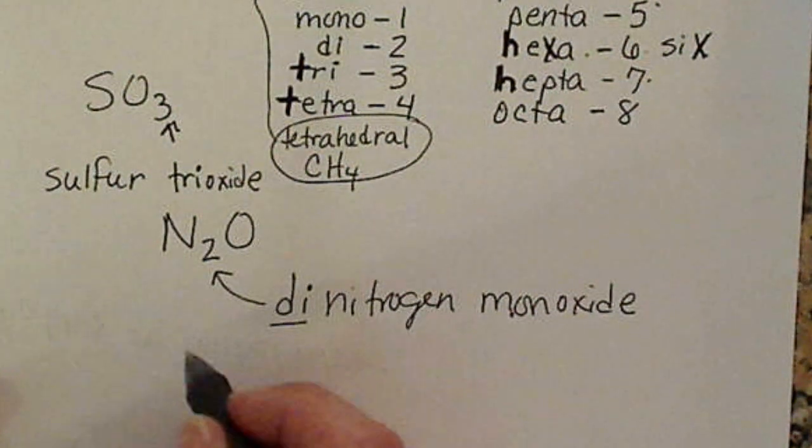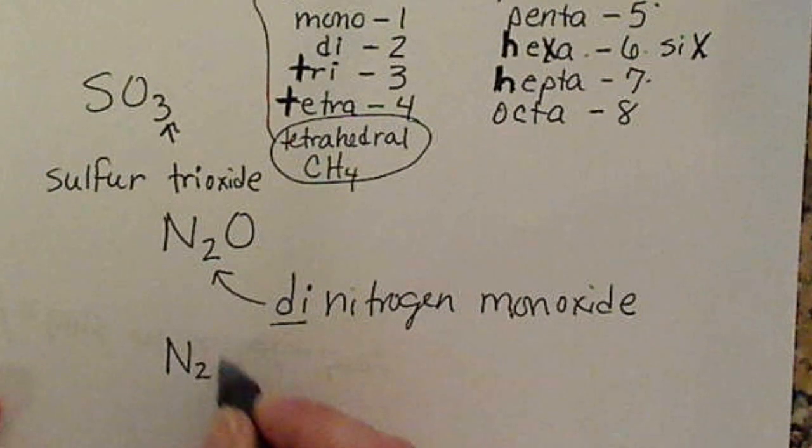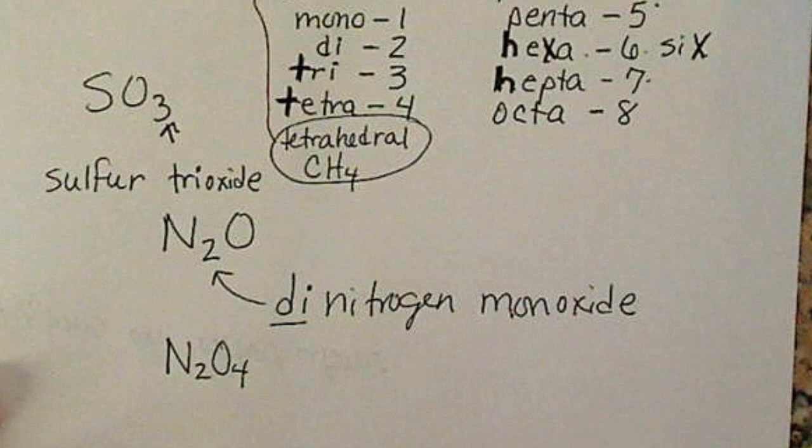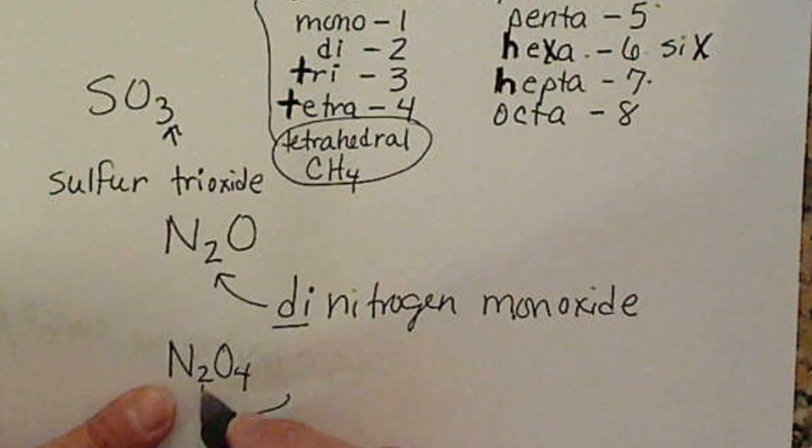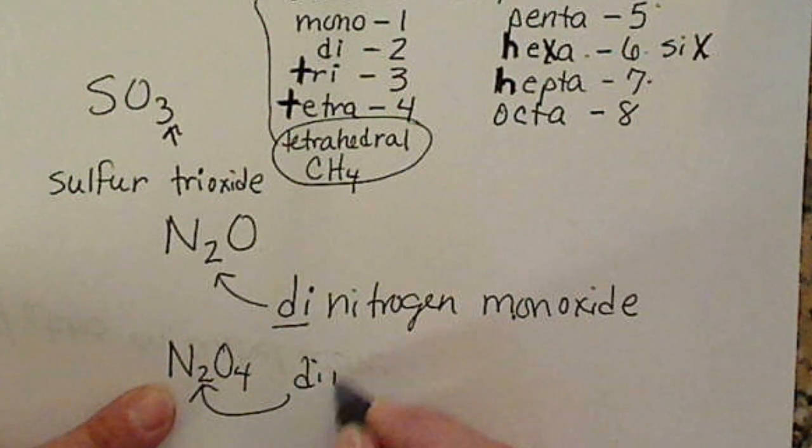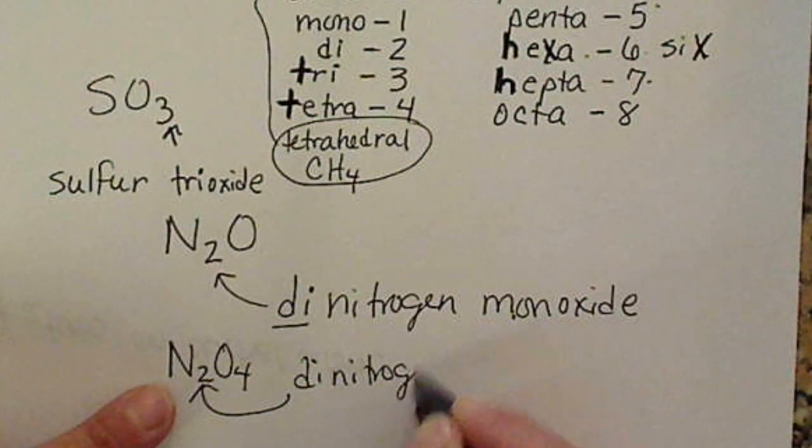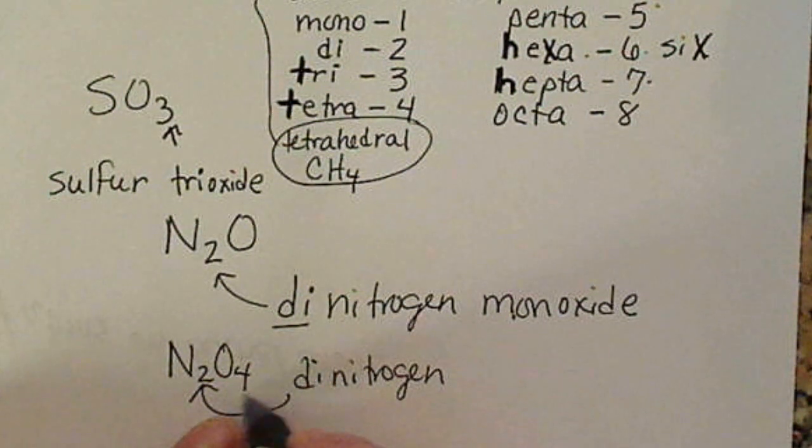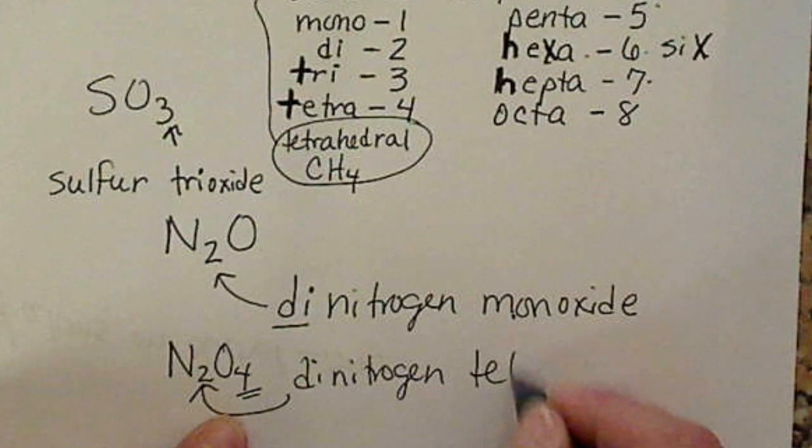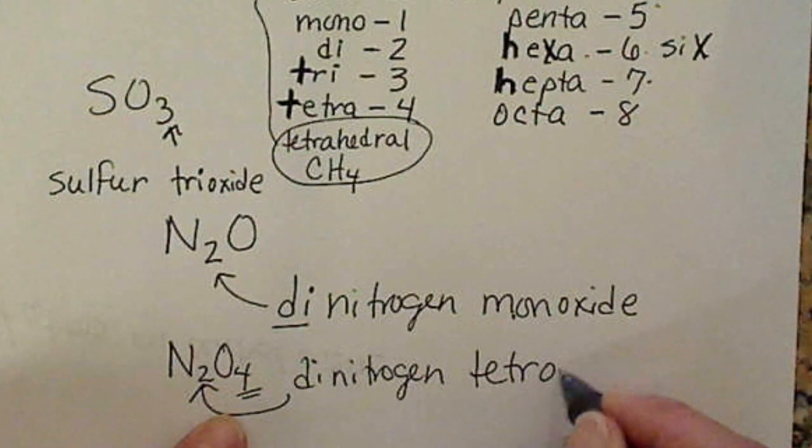We could have larger molecules, for example, like N2O4. And again, because there's two nitrogens there, this would be dinitrogen. And then four oxygens is tetraoxide.